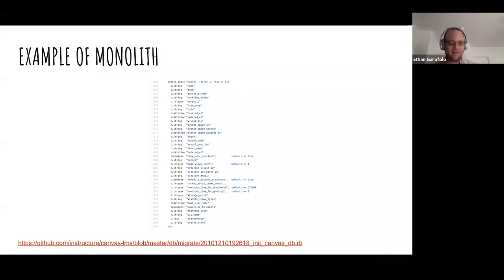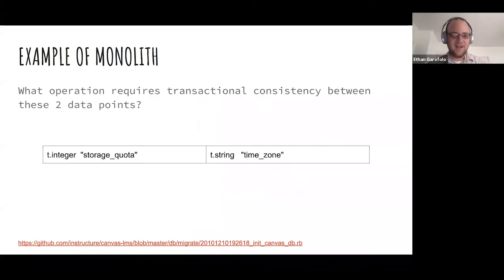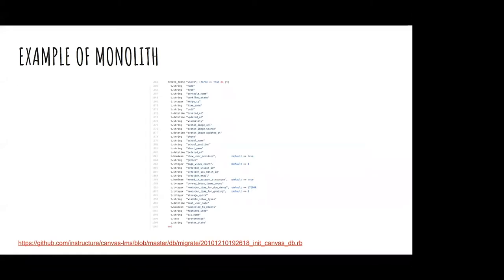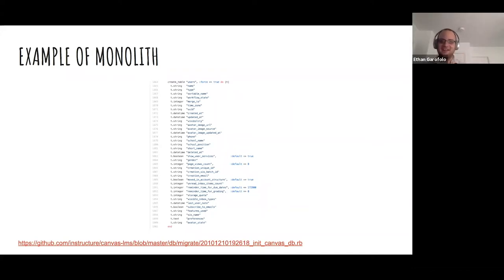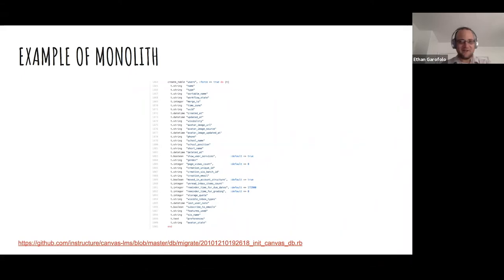Monolith versus microservice. Here is an example of a monolith — this is a users table from a local company that made their flagship product open source so we can look at it. What makes it a monolith is the sheer diversity of data stored in this user object. I just want to say I've worked with that and it's a mess — I was on the mobile team. Meeting the mobile team and interfacing with that monolith was a mess. Rails begets architectures like this.